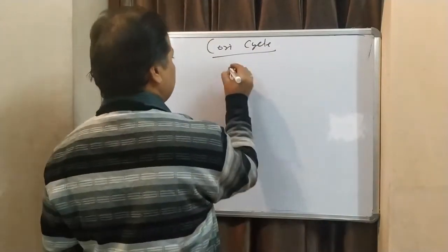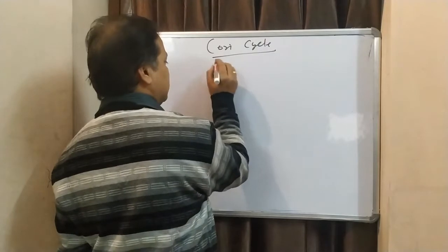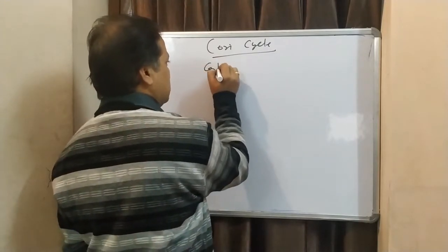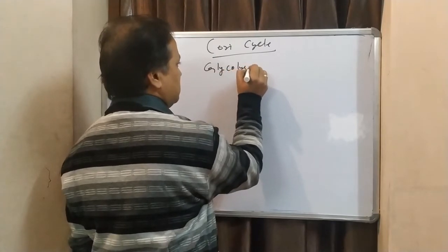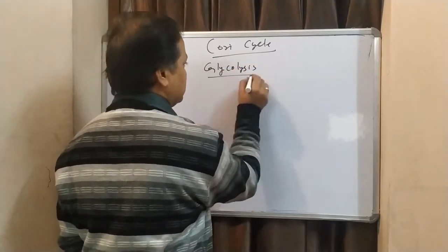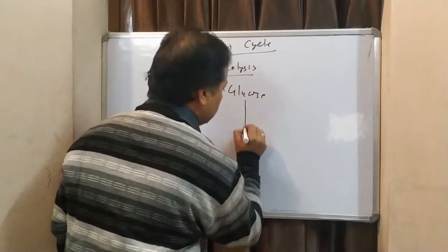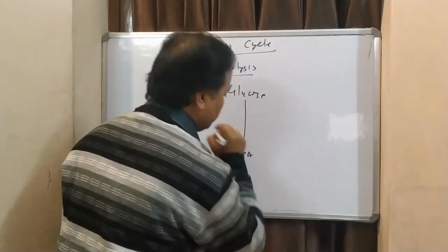As we are knowing that, in the case of glycolysis, glucose is converted to pyruvic acid.